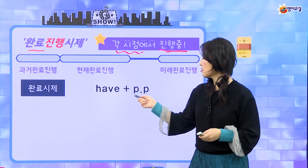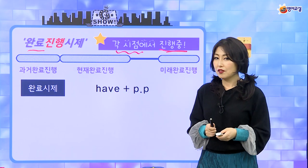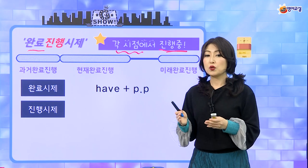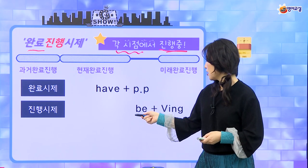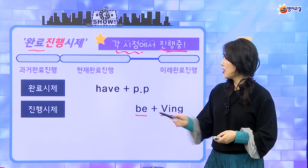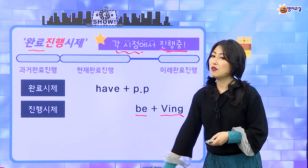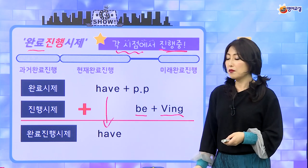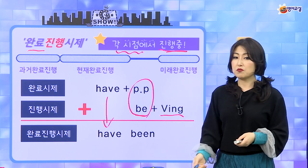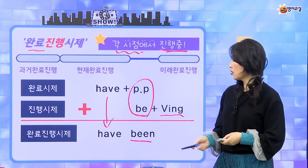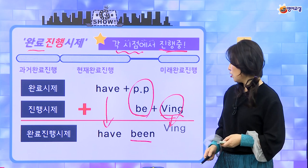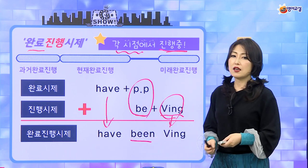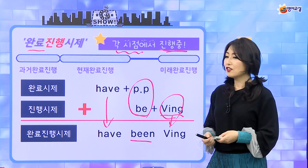완료 시제 기본 폼은 have + PP죠. 그 다음에 진행 시제 기본 폼은 be동사에 동사 ing를 붙였었죠. 얘네를 합쳐서 완료 진행 시제를 만들 거예요. have는 그대로 내려오고, be랑 PP가 합쳐지면 be동사의 과거분사형인 been이 오고, 그리고 동사의 ing가 그대로 내려와요. 그래서 완료 진행 시제는 have been + 동사의 ing로 만들면 되는 거예요.